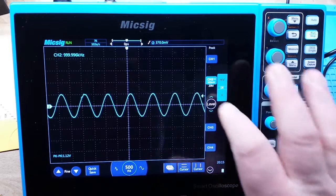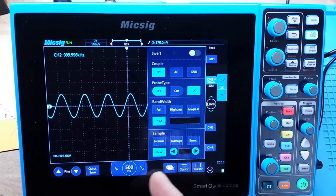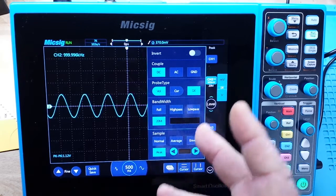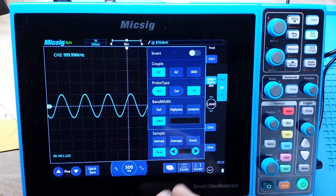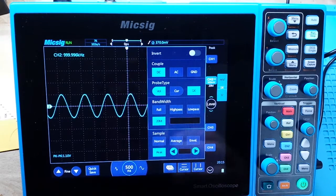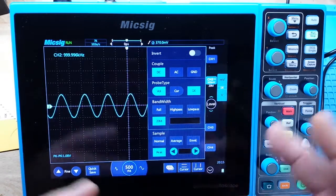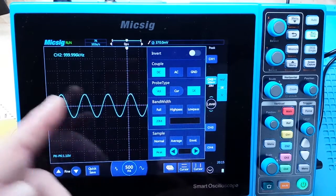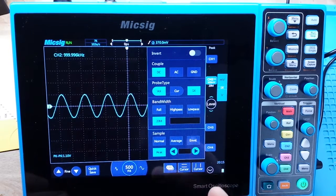Then our next mode, this one doesn't have it, is high-res mode. High-res is basically over sampling. The ADC is running super fast and it samples more points than it needs and it plots more points than you're looking at in a normal or peak detect mode. It gives a cleaner picture, I guess that's the best way to put it.